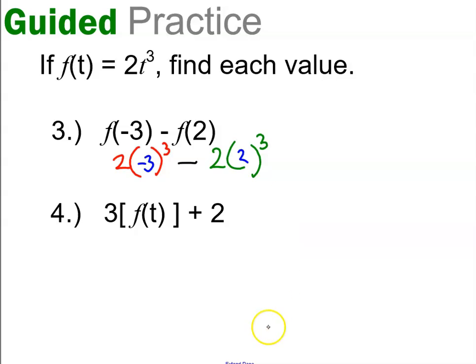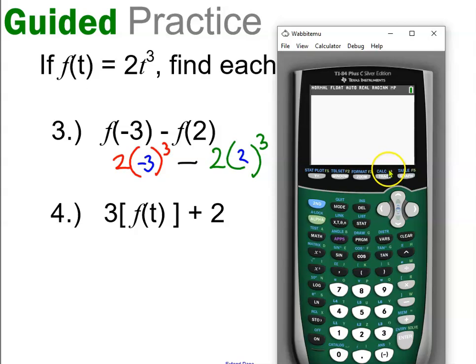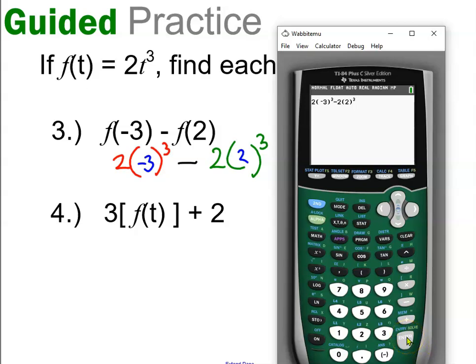I can certainly do this piece by piece, but I recommend using your calculator. There's no sense in making a silly mistake. Type exactly what you see: 2 times negative 3 raised to the third power, then arrow over, write your subtraction sign, 2 times 2 raised to the third power. You're going to get your whole answer complete in one step: negative 70.